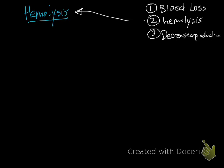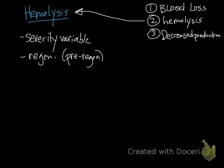Hemolysis is the second cause of anemia we're going to talk about. A few things to mention: the severity of anemia associated with hemolysis is variable, from mild to extremely marked. These tend to be regenerative, of course, along with blood loss. They can be pre-regenerative since these guys tend to present acutely, so you may see it before they start regenerating.